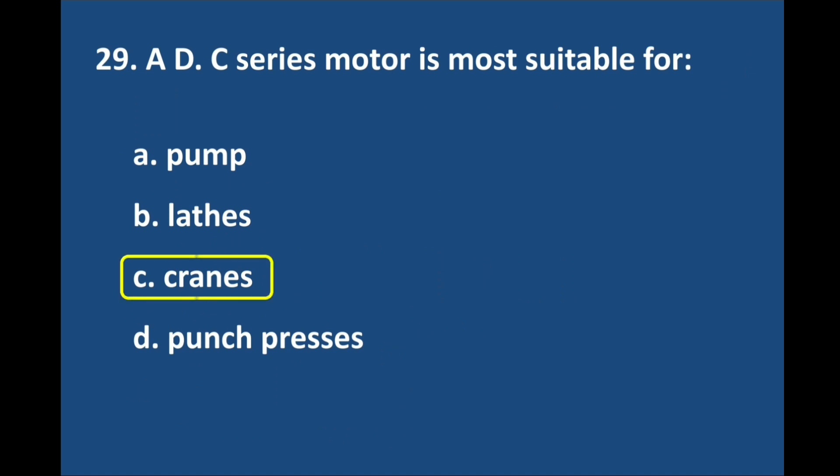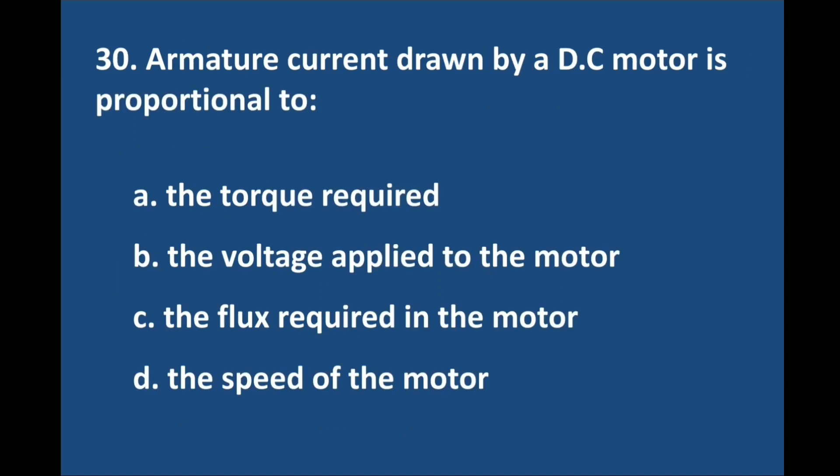Question number 29. A DC series motor is most suitable for — answer is option C: Cranes. Question number 30. Armature current drawn by a DC motor is proportional to — answer is option A: The torque required.